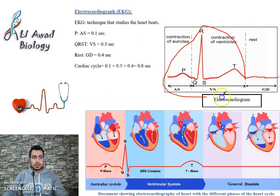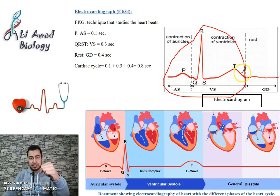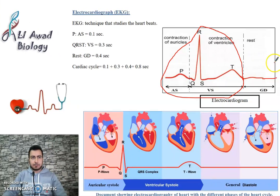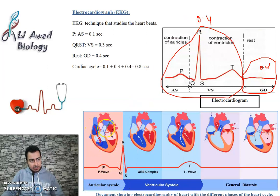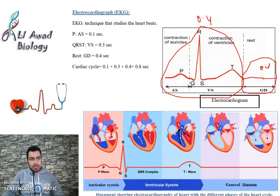From here to here — all of this is the auricular and ventricular systole. This is the auricular systole P: the two auricles contract to push blood toward the ventricles. Then QRST: the two ventricles contract to push blood toward the arteries — the aorta and pulmonary artery. Then the general diastole, at the state of relaxation, where the veins bring blood to the auricles.